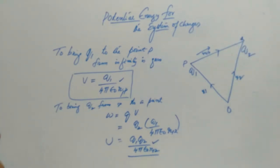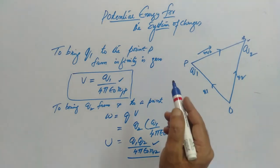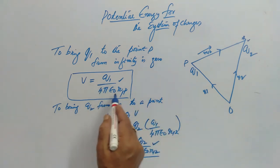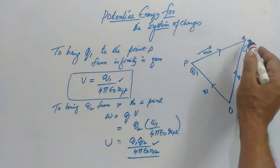Now the same potential energy can be obtained if you bring first Q2 to this position. Then the potential it creates is the potential due to Q2, because to bring Q2 in the absence of any other charge, the work done is zero. Once Q2 is placed, it becomes Q2 by 4π epsilon naught R2P.